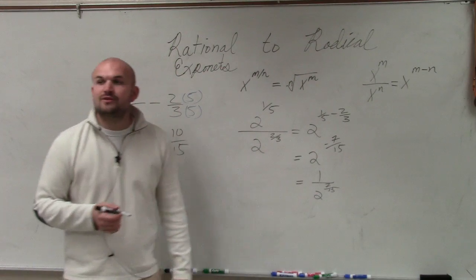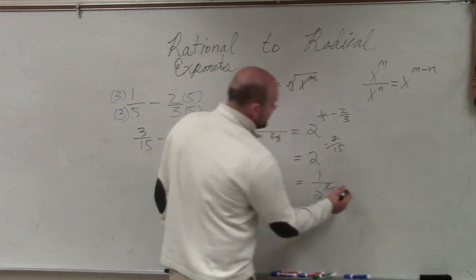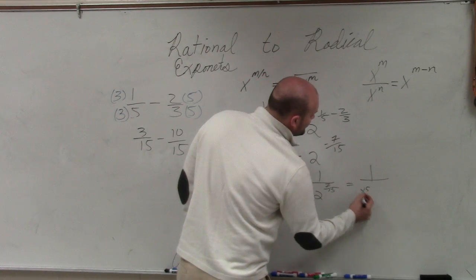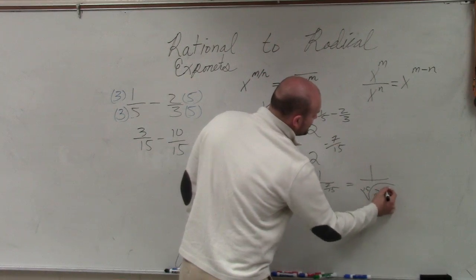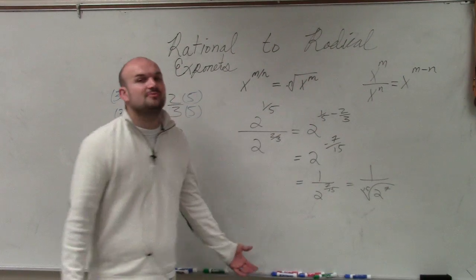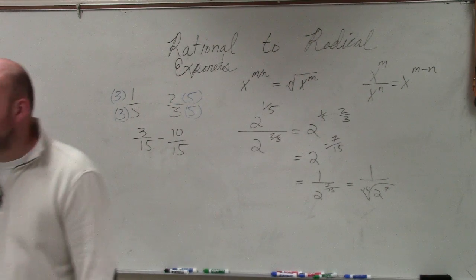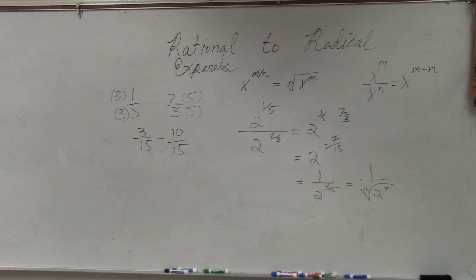Then, if I wanted to rewrite this as a radical, David, I would simply say 1 over the 15th root of 2 to the 7th power. And obviously, you could simplify 2 to the 7th power, but I don't have a calculator, so I'm not going to do that right now, even though that would be 32, 64, 128.